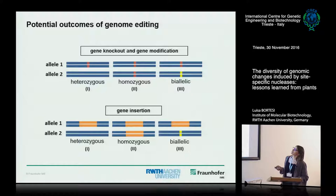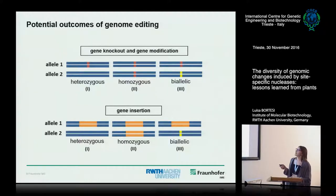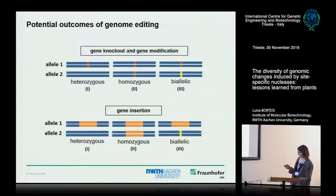On the allelic level, what are the outcomes of genome editing? In the simplest case of a diploid plant, you have two alleles for every trait. You can have a heterozygous outcome when only one allele is mutated, a homozygous outcome when both are mutated the same way, or a bi-allelic outcome when both alleles are mutated but with different kinds of mutations.